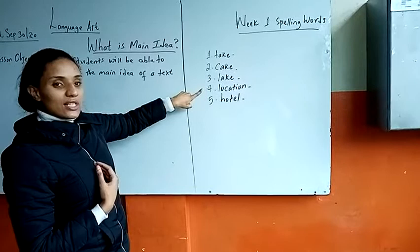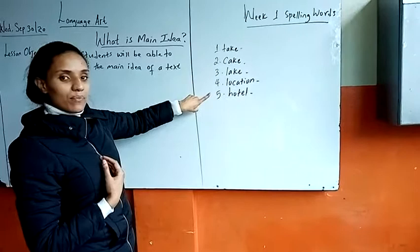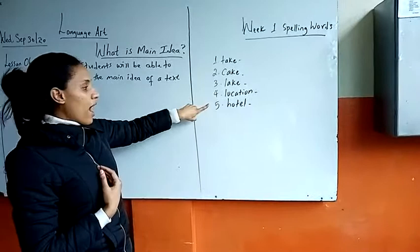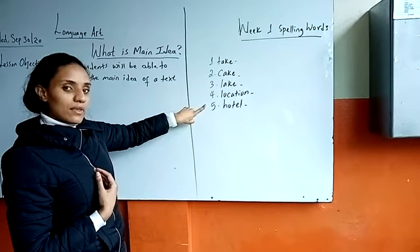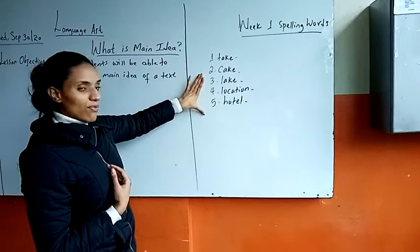The last spelling word is 'hotel.' For example: last week I visited my friend in a nearby hotel. I hope you understand those five words. Again, my name is Jovi and I'm your new school teacher. Thank you.